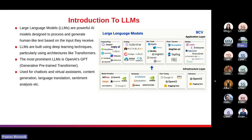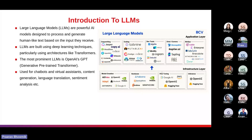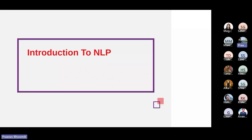However, LLMs also raise ethical concerns such as bias amplification, the potential of generating misleading information, and issues of ownership and accountability. Researchers and developers are actively exploring methods to mitigate these challenges and ensure responsible use of LLMs. In summary, LLMs are advanced AI models capable of processing and generating human-like text, with numerous applications and exciting opportunities in various domains. LLMs are currently very much in use and most clients are also interested in these models for their own work.